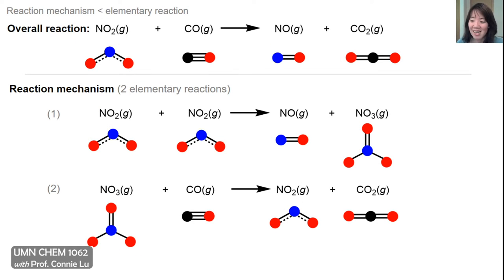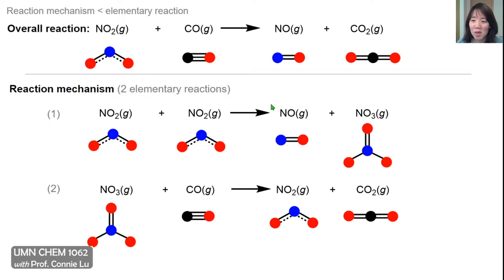Here's another hypothesis of what might be going on in this reaction. The overall reaction is found at the top, and in this proposed mechanism there are two steps. In the first step, two molecules of NO2 collide together to form one of the products, NO, and a new molecule — the nitrate radical, NO3. This nitrate radical, in the second step, reacts with carbon monoxide to give back one of the reactant molecules, NO2, but generates the second product, CO2.